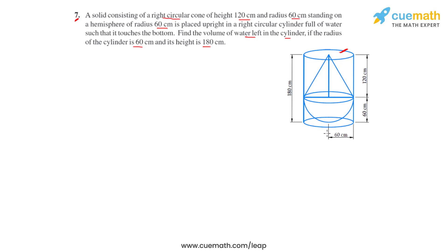The radius of the hemisphere, cylinder, and the cone is same, that is 60 cm. So for all we can write that r equals 60 cm.